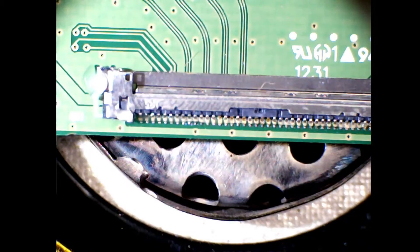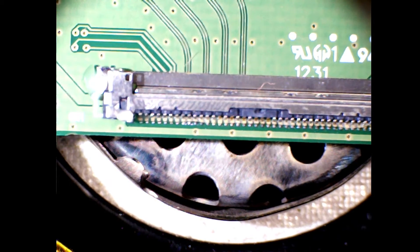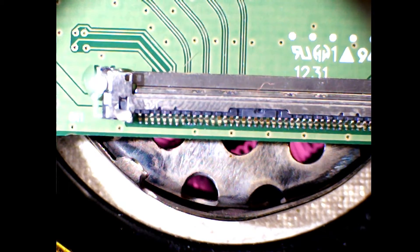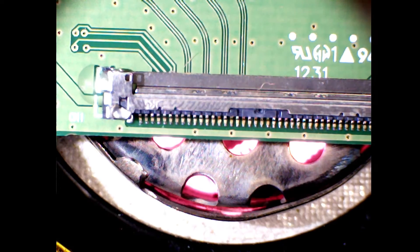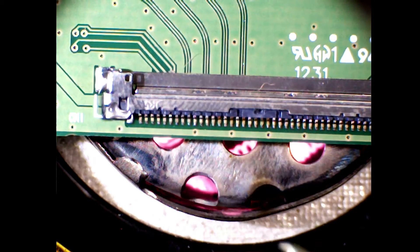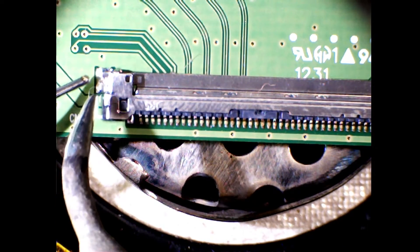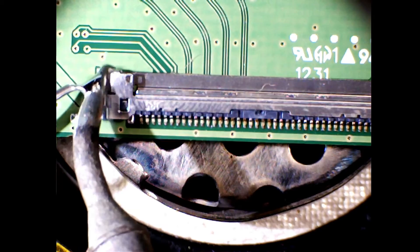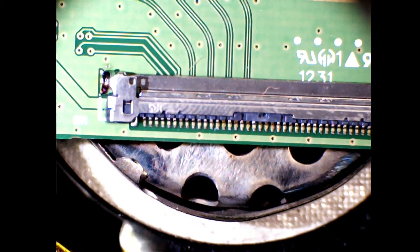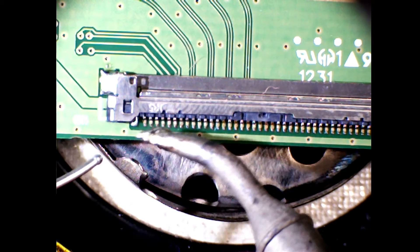Next thing I do is switch on the preheater. I'll be applying a bit of leaded solder purely because the melting point is a lot lower than lead free. Leaded solder melting point is 183 degrees Celsius versus 217.